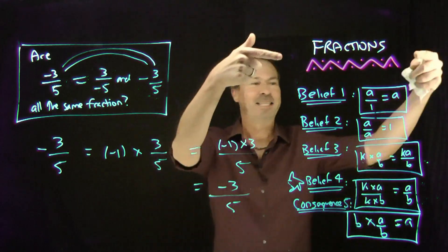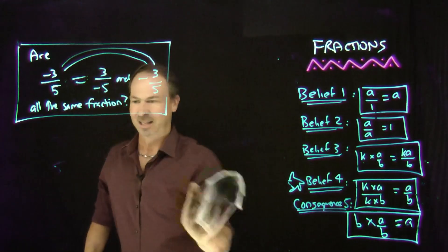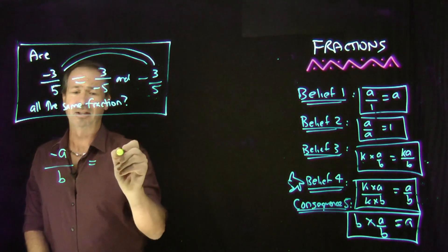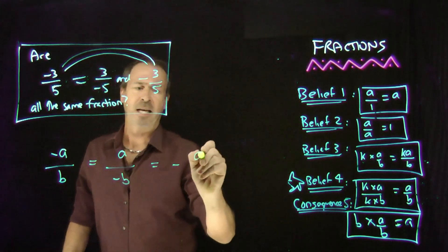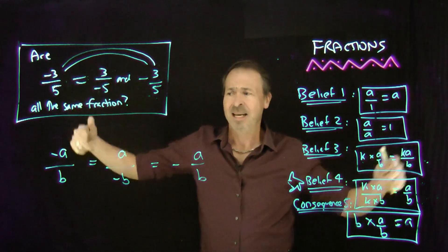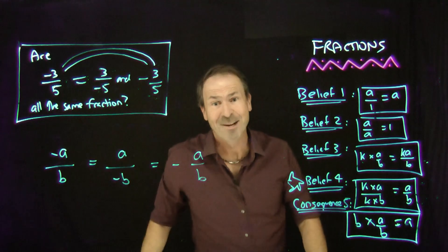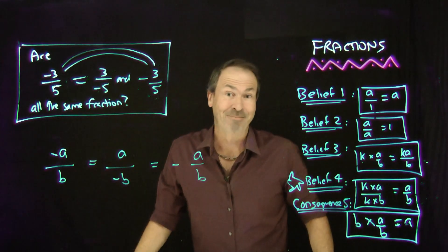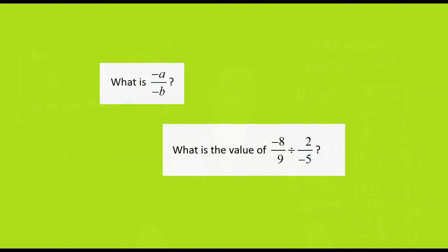Beautiful. There it is as a logical consequence of our beliefs about fractions. We've just established, in general, that negative a over b is actually the same as a over negative b, which is the same as negative of (a over b). People often just pull out minus signs as though it's obvious and natural — and actually, we've now proven that one really can do that. It's not just natural and obvious; now we know it's true for sure.